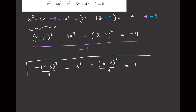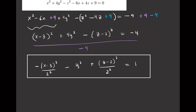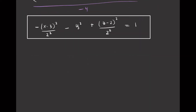This is a hyperboloid of two sheets because there are two negative signs, all terms are squared, and it equals 1. The center of this surface is (3, 0, 2). Since Z is the positive term, the surface opens along the Z axis, and we travel 2 units in the Z direction from the center.